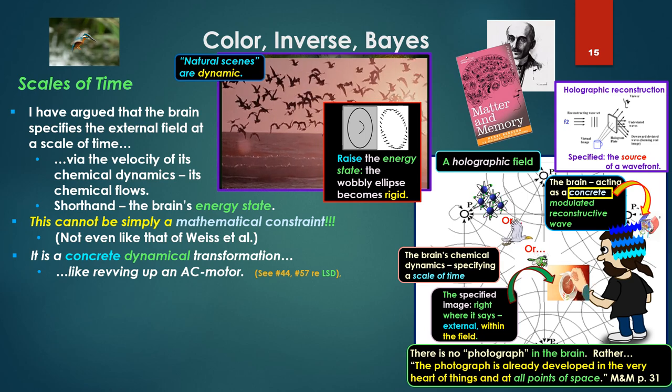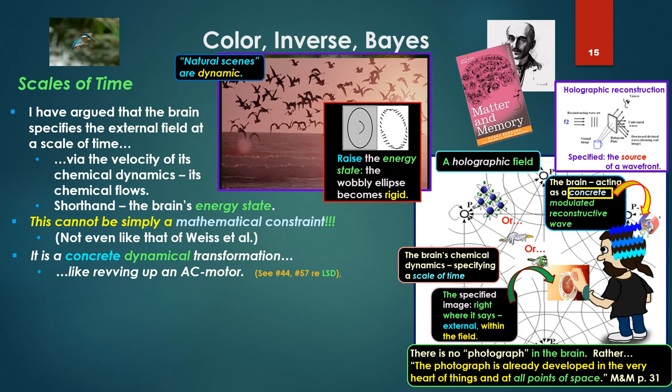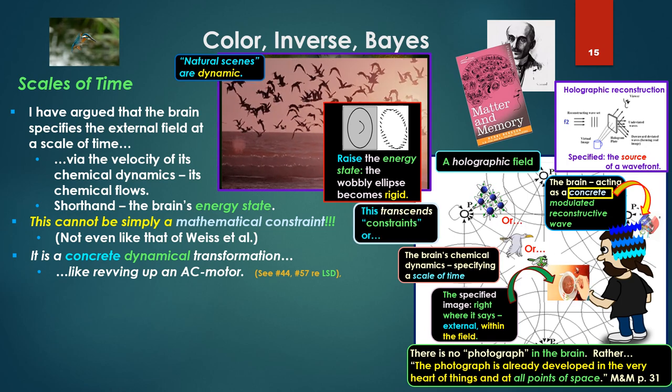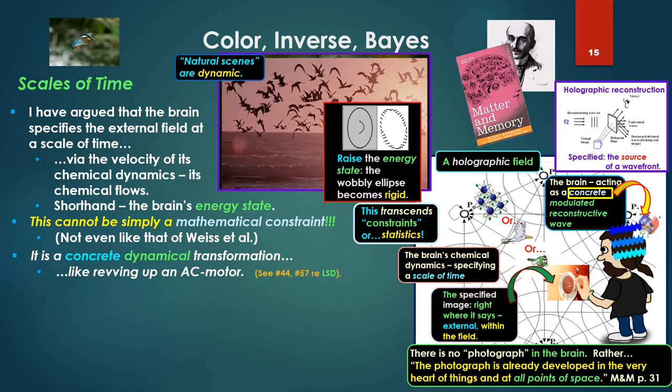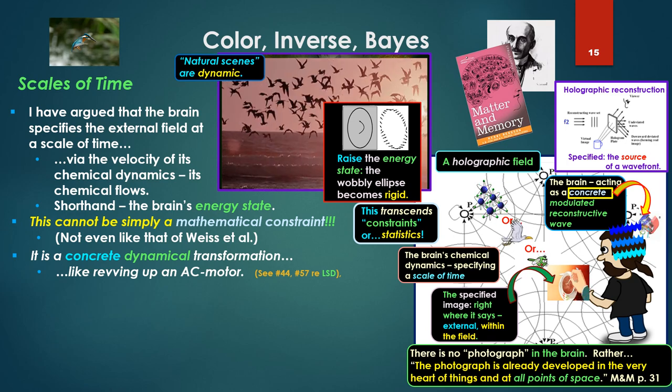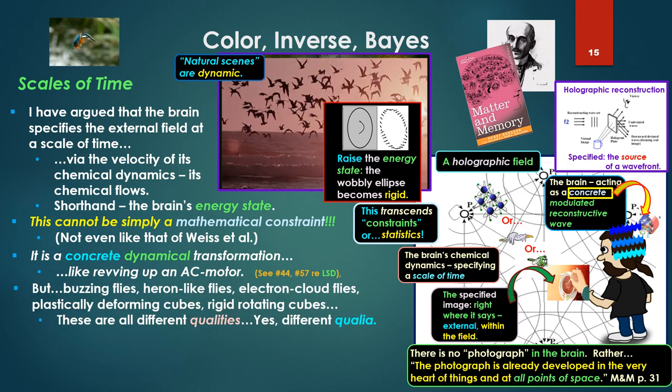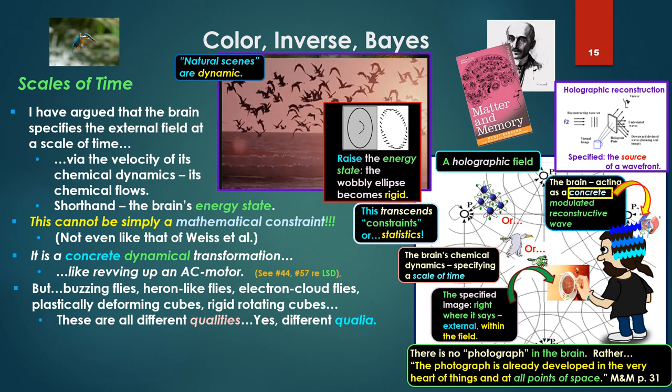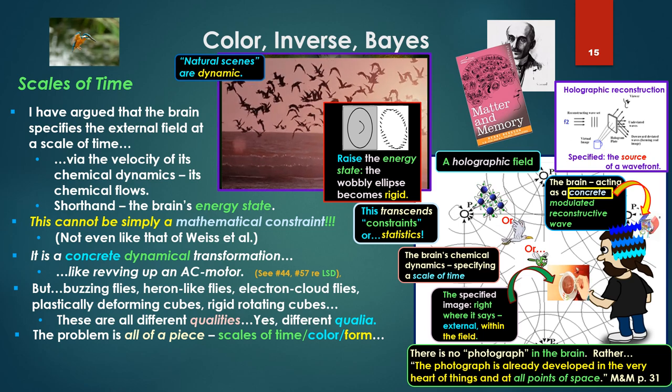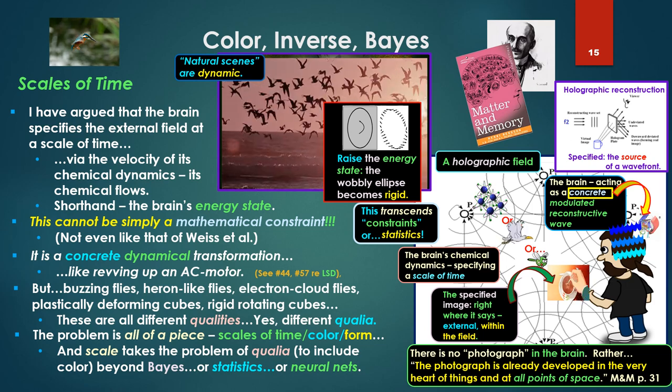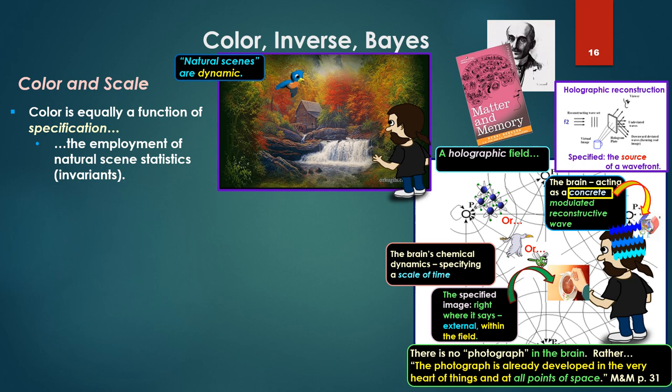Again take the rotating ellipse. Let's say it's rotating so fast it's seeming non-rigid, wobbly. If I raise the energy state, that wobbly ellipse becomes rigid. It's a prediction. This transcends constraints, mathematical constraints or mathematical statistics. Think about that. This is completely transcendent. This is concrete raising of an energy state, like revving up an AC motor. This is beyond the mathematics. But buzzing flies, heron-like flies, electron cloud flies, plastically deforming cubes, rigid rotating cubes, these are all different qualities, yes, different qualia. The problem is all of a piece: scales of time, color, form like cubes.